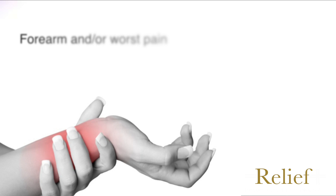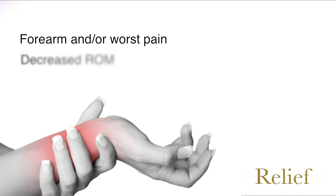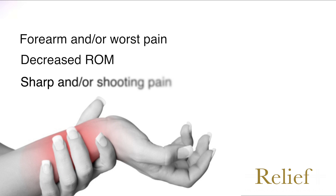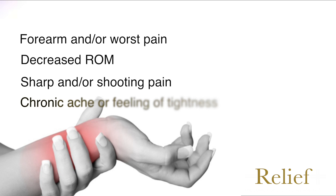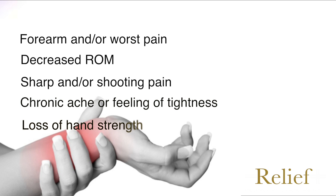Wrist tendinitis has the following symptoms: forearm and/or wrist pain, decreased range of motion, sharp and/or shooting pain, chronic ache and feeling of tightness, and loss of hand strength.